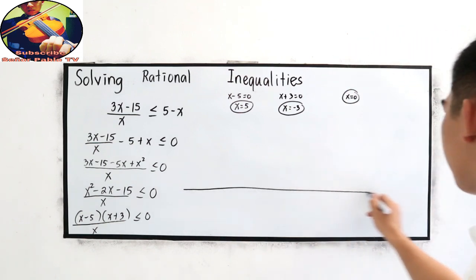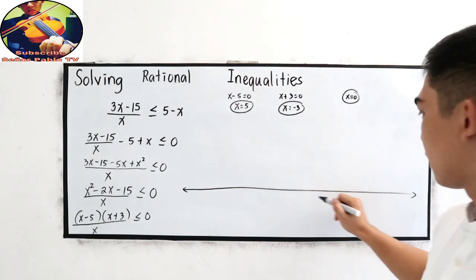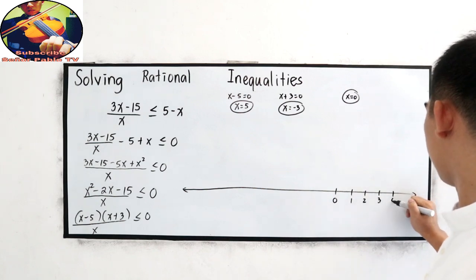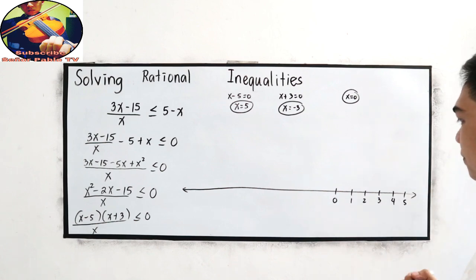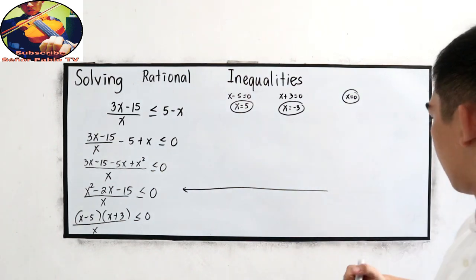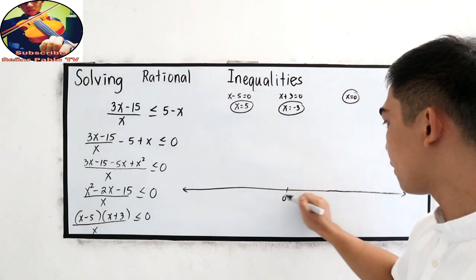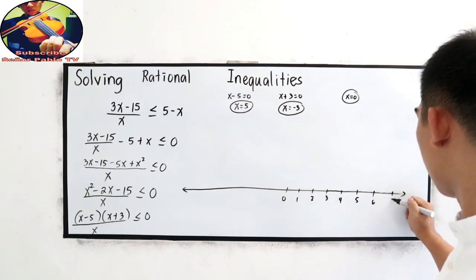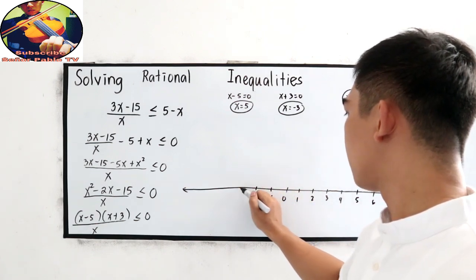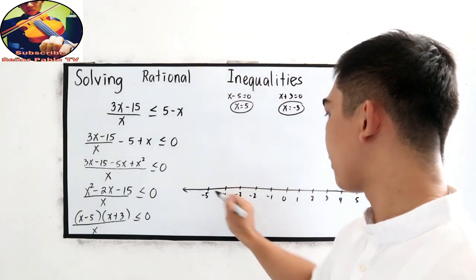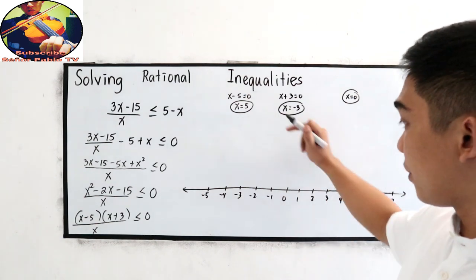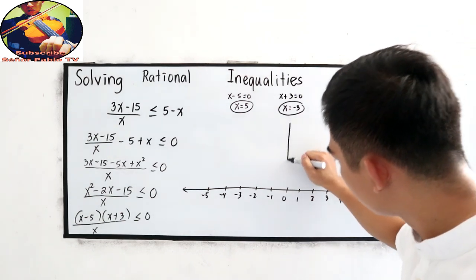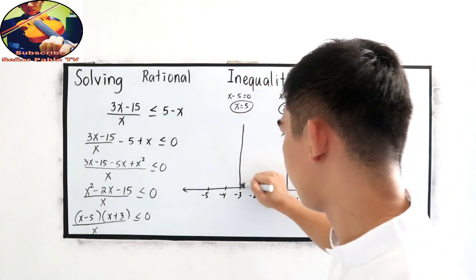Now set up our number line. We place values from negative 5 through positive 7. Locate our three zeros: positive 5, zero, and negative 3, each marked on the number line. These divide the number line into four regions to test.